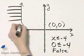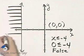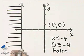So this is the graph of x less than or equal to negative 4.